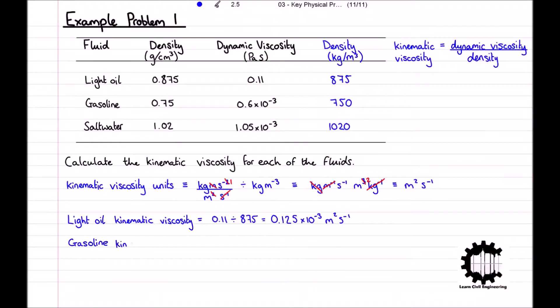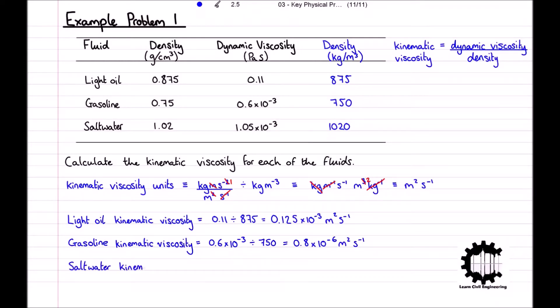The kinematic viscosity of the gasoline is equal to 0.6 times 10 to the power of minus 3 divided by 750, which equals 0.8 times 10 to the power of minus 6 metres squared per second. And finally, the kinematic viscosity of salt water is equal to 1.05 times 10 to the power of minus 3 divided by 1020, which equals 1.03 times 10 to the power of minus 6 metres squared per second. Well done if you got all of those correct, but now let's have a look at a slightly more complicated problem.